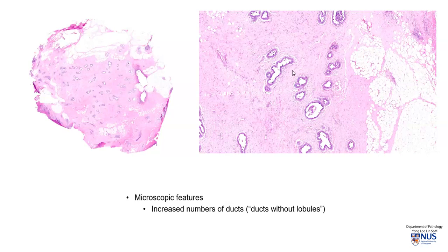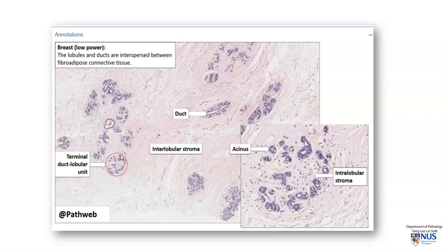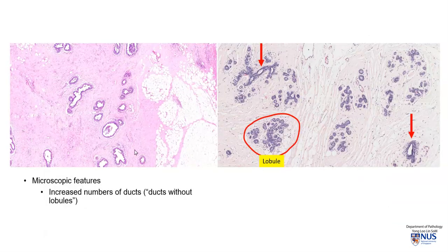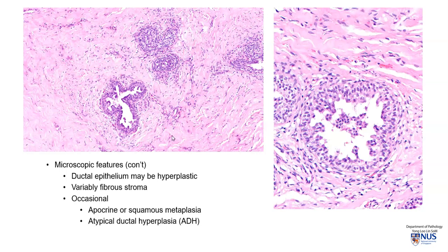Microscopically, there are increased ducts not accompanied by lobules — ducts without lobules. Comparing gynecomastia on the left with the normal female breast on the right, you can see a lobule and ducts in the female breast, whereas in gynecomastia these ducts appear quite naked. There may sometimes be hyperplasia of the ductal epithelium, and the stroma is variably thick or dense in terms of collagen.